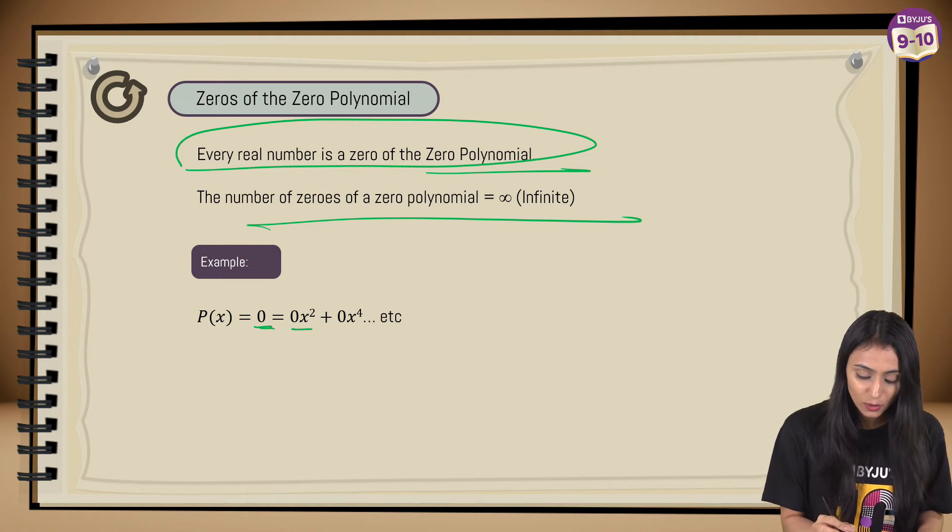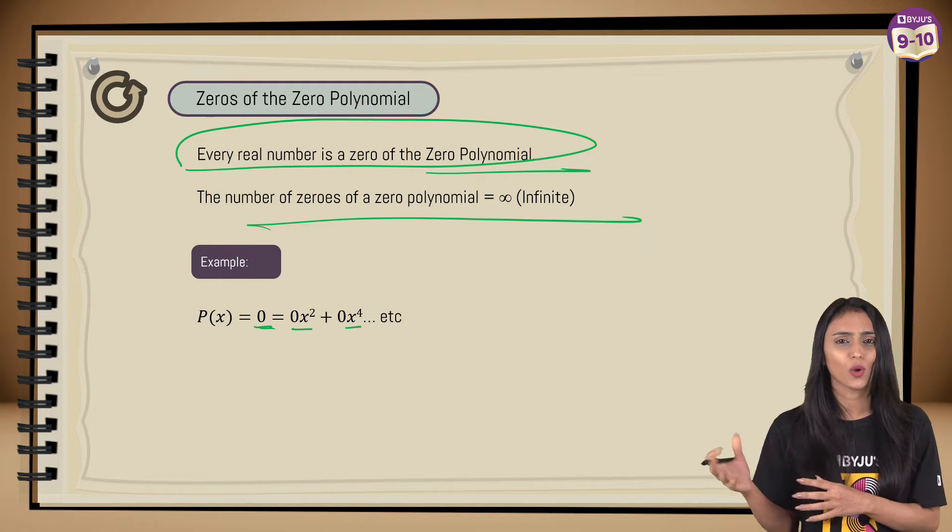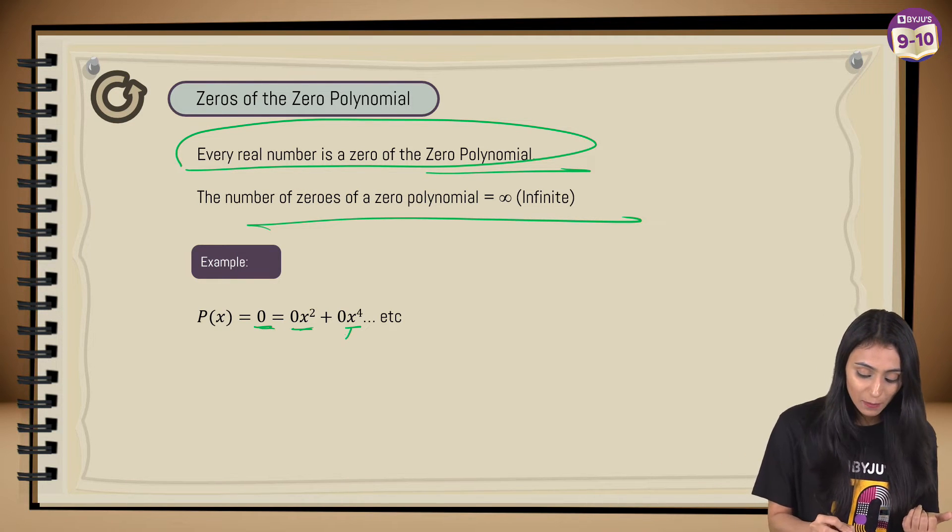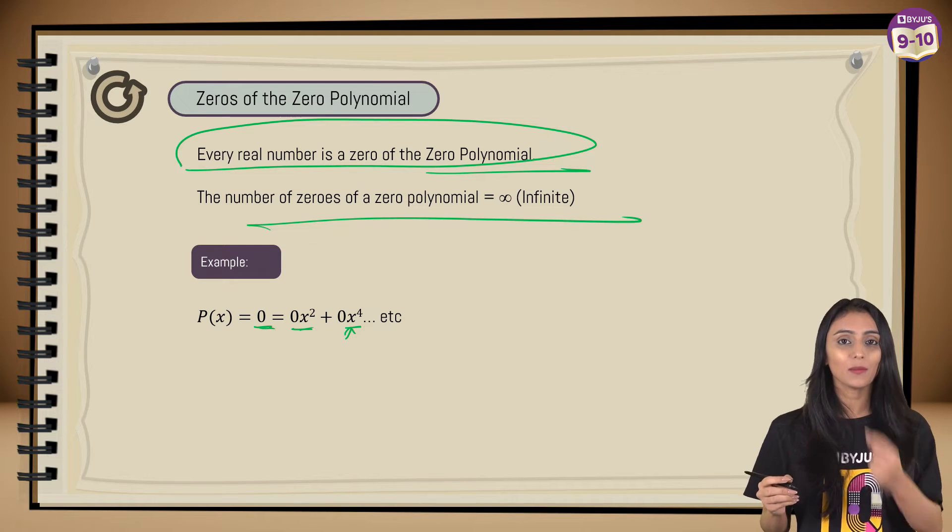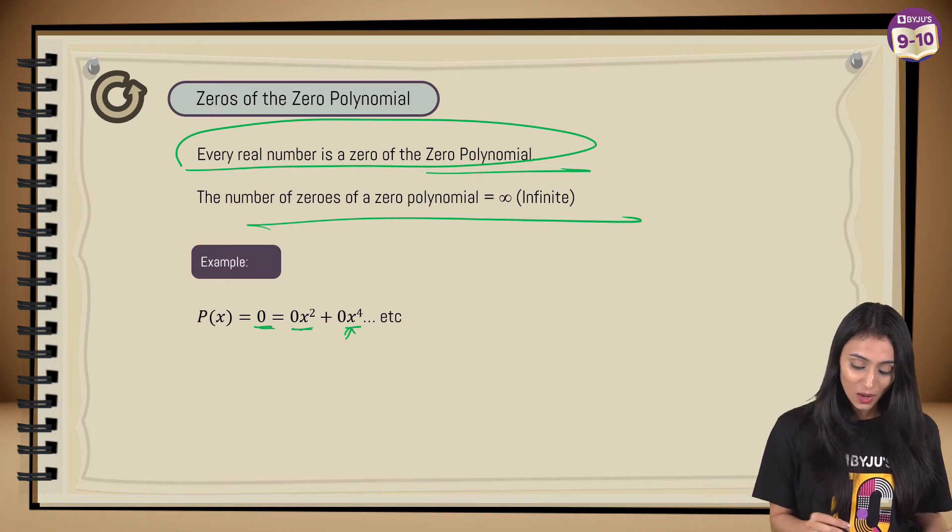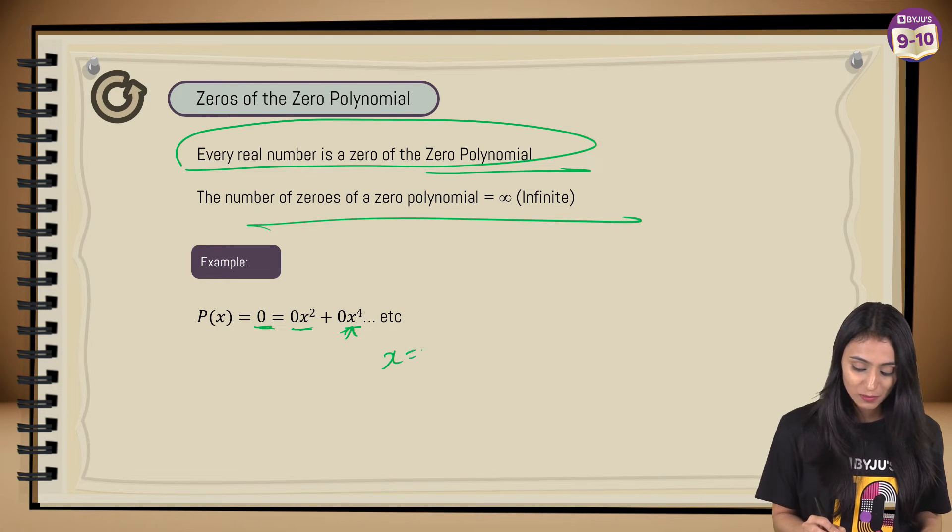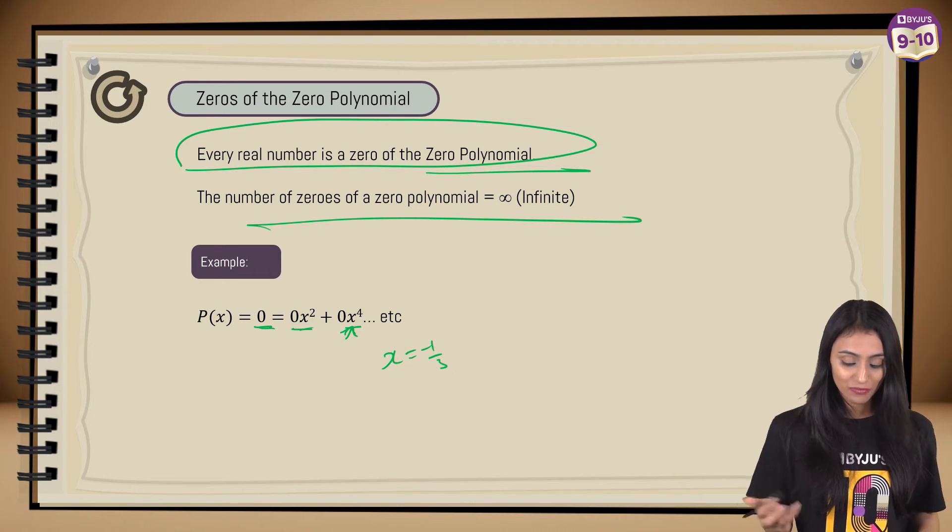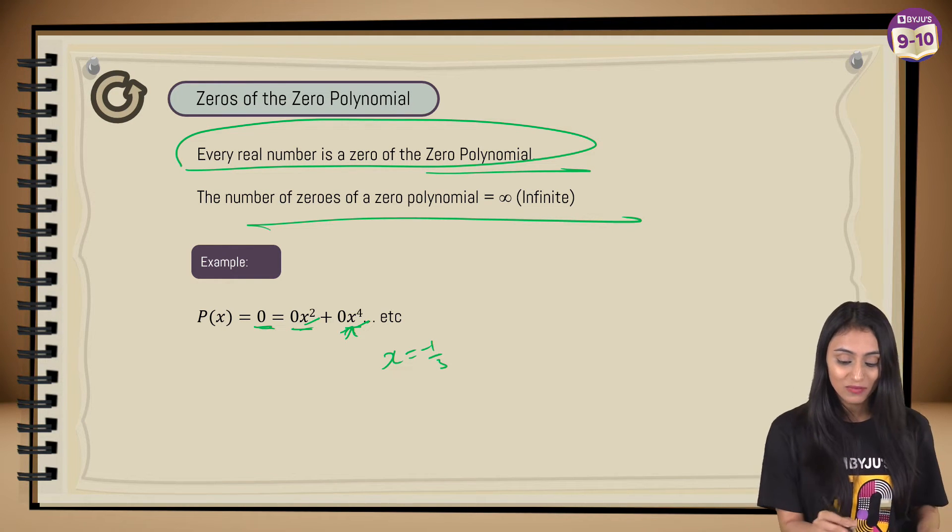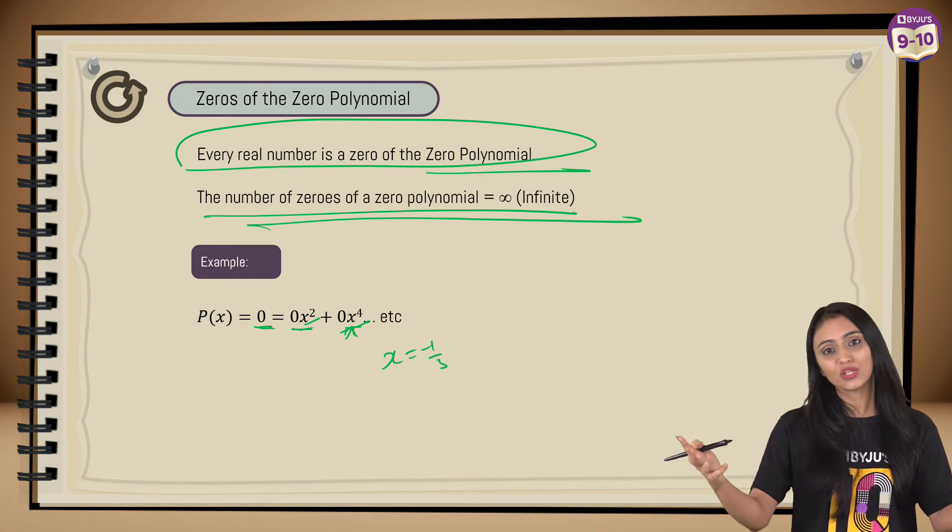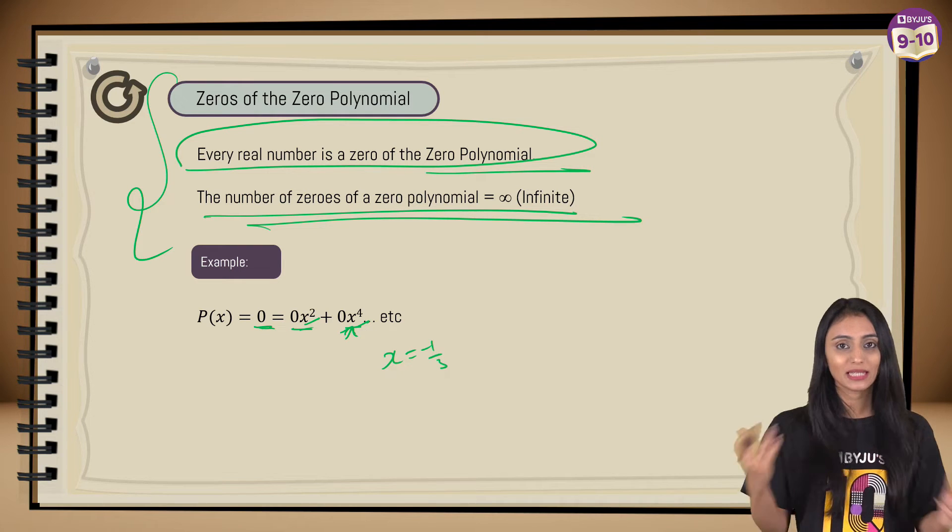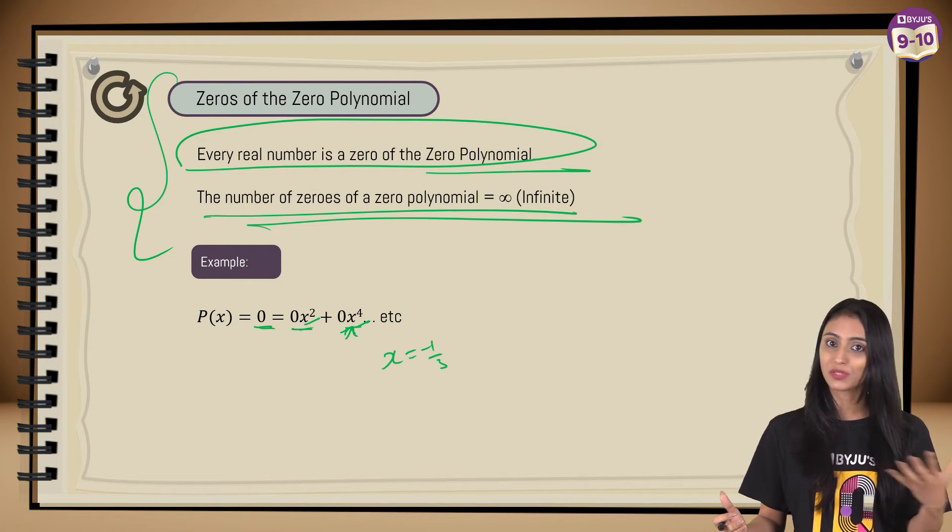Zero can be written any way. I can write it as 0x² + 0x⁴ + ... doesn't matter whatever I write with zero, because at the end it's going to be zero only. So whatever number, I mean, by whatever real number I replace x with, doesn't matter, it will still be zero only. Whether, let's suppose if I put x over here as -1/3, does that make any difference to over here? No, because any number multiplied by zero will give you zero only. That's why we say there are infinite number of zeros possible for a zero polynomial. This is one conceptual question which is asked a lot many times in the paper also, and as I said it confuses a lot of students.